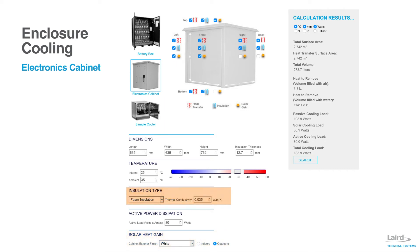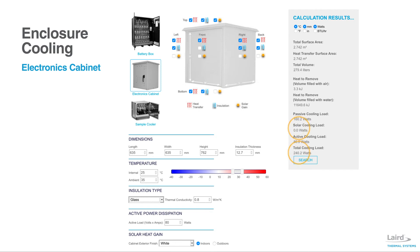In this case, we are going to add a glass door at the front. Therefore, we will take the insulation away from the glass door and eliminate the solar gain since this is an indoor application. Notice that as we make those changes, the cooling load is constantly being updated on the right side under calculation results. Our total requirement is 240.2 watts, of which 80 watts come from our active dissipation, while the other 160.2 watts is passive.